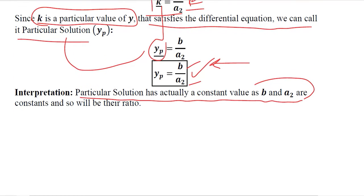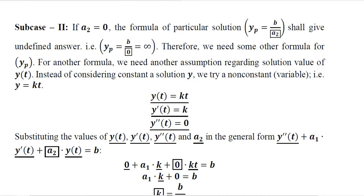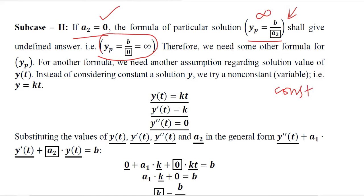Now let's talk about subcase 2, in which A2 is considered to be 0. If A2 equals 0, we cannot use the formula from subcase 1 because A2 is in the denominator and the result would be undefined. So we must develop another formula. The next option is to assume the particular solution is not a constant but a variable, meaning Y equals KT — a term that includes a variable.